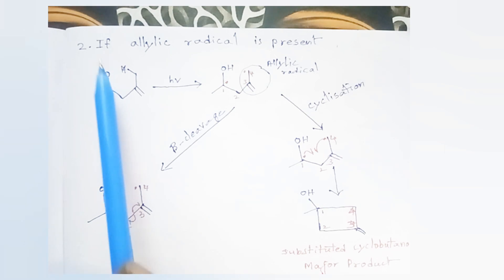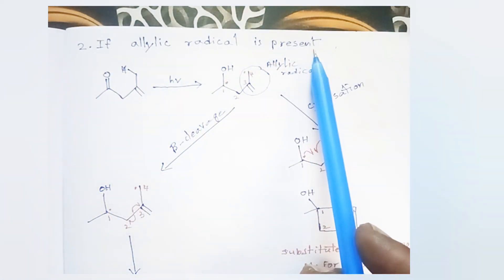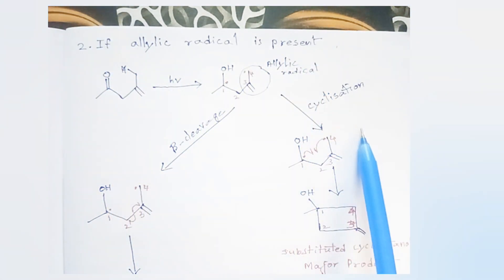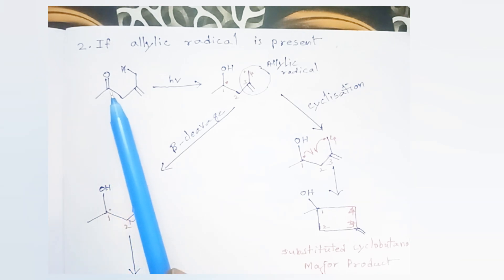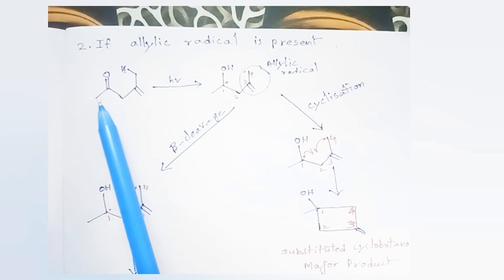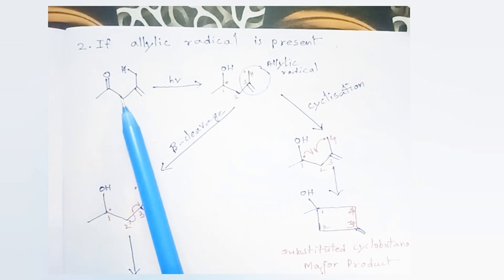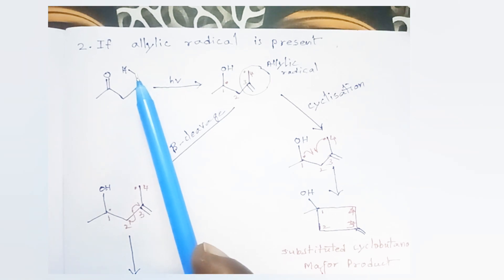If an allylic radical is present, the cyclic product is major. This is the carbonyl compound with an allylic radical.